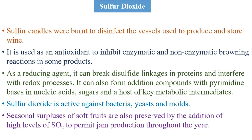Sulfur dioxide: sulfur candles were burned to disinfect vessels used to produce and store wine. It is used as an antioxidant to inhibit enzymatic and non-enzymatic browning reactions. As a reducing agent, it can break disulfide linkages in proteins and interfere with redox processes. It can also form addition compounds with pyrimidine bases in nucleic acids, sugars, and key metabolic intermediaries. Sulfur dioxide is active against bacteria, yeast, and molds. Seasonal surpluses of soft fruit juices are also preserved by addition of high levels of sulfur dioxide to permit jam production throughout the year.